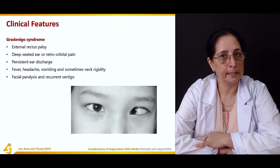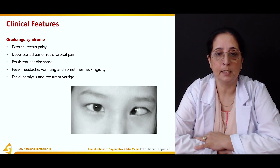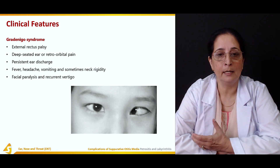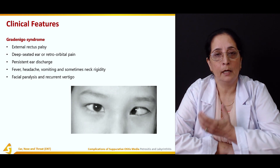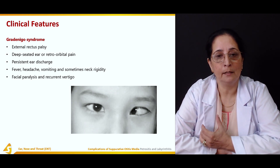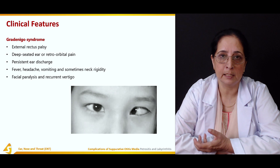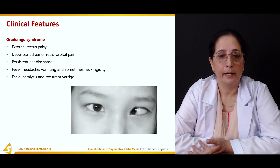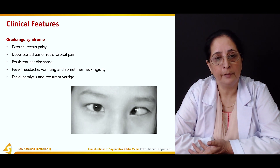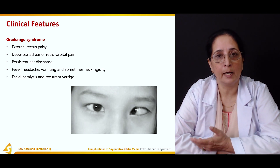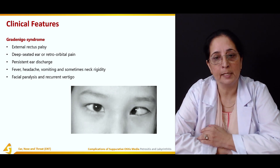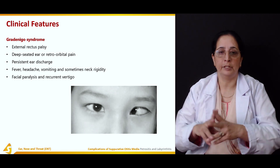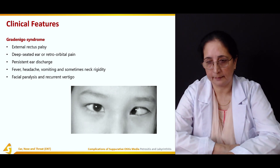To summarize, the features of Gradenigo's syndrome are: external rectus palsy, deep-seated pain, retro-orbital pain, persistent ear discharge, fever, headache, vomiting, and neck rigidity.